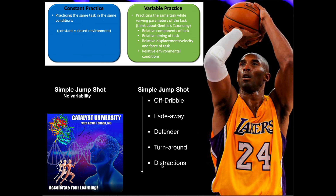You can even change environmental conditions like lighting or background noise. For example, when the away team has a player shooting a free throw, the crowd behind the goal makes a huge amount of noise and waves things to distract the shooter. All of these parameters can be varied — components of the task, timing (which is affected when shooting off a dribble or against a defender), displacement or velocity (for instance, shooting faster when running out of time), and environmental distractions.